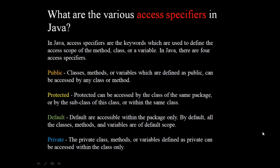What are the various kinds of access specifiers present in Java? Access specifiers are keywords which are used to define the access scope of a method, a class, or a variable — up to what extent they can be accessed. In Java, there are basically four types of access specifiers: public, protected, default, and private.